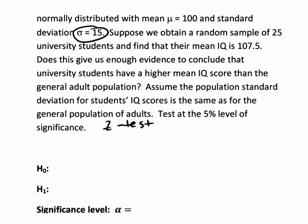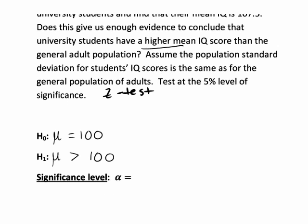Since sigma is known, this would be an example of a z-test. The null hypothesis would be that there is no difference in the mean IQ of the student population and that of the general adult population, so H0 says mu equals 100. H1, since we're specifically looking at whether university students have a higher mean IQ than the general adult population, says that mu is greater than 100.